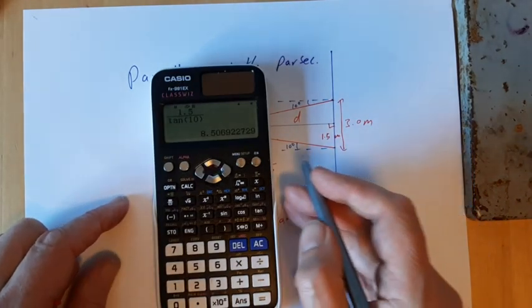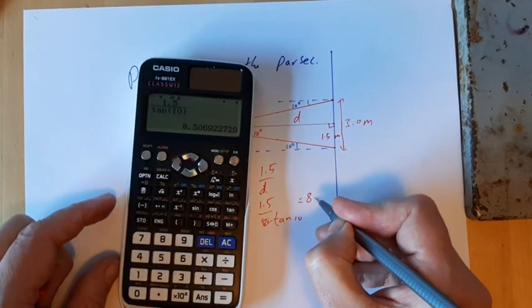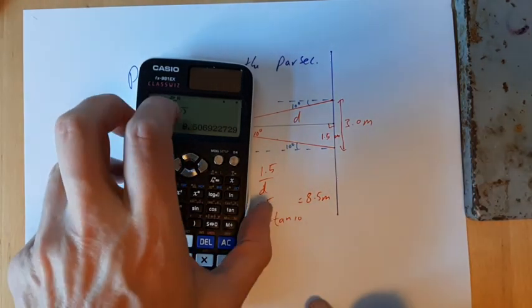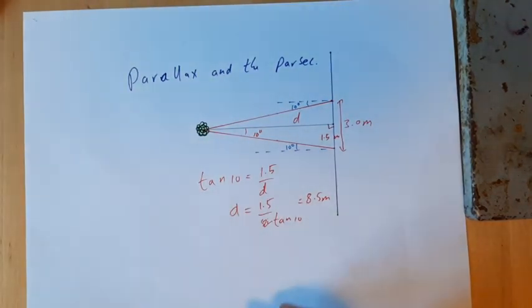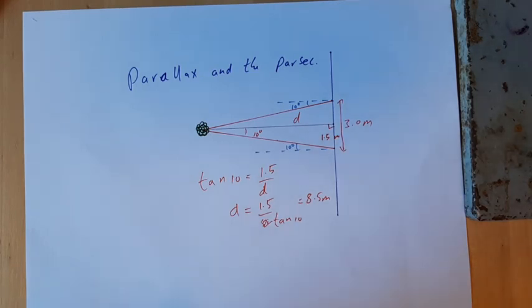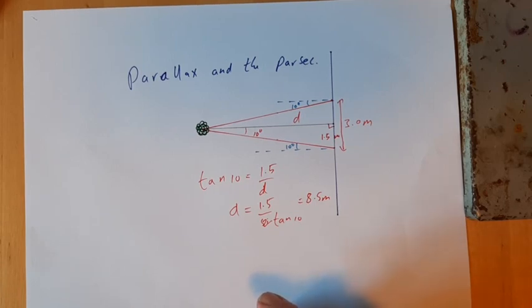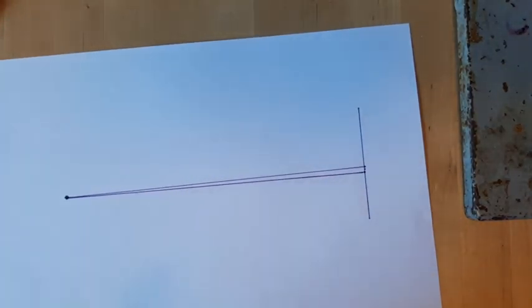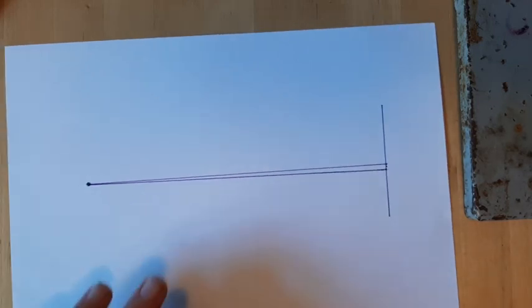The distance to the tree, to two significant figures, is 8.5 metres. And that is roughly how we go about measuring the distance to stars — the idea that we make two measurements from a baseline and get some angle information, and from that we can deduce the distance to the object. We've got a more extreme example here, because we're encouraging you not to use trigonometry for these things.